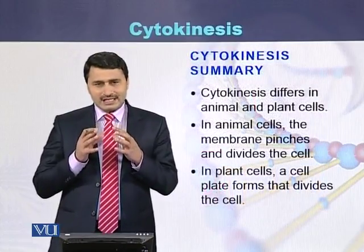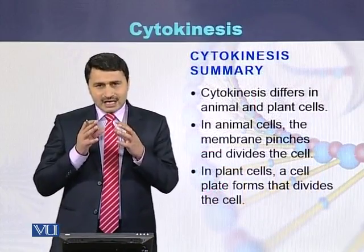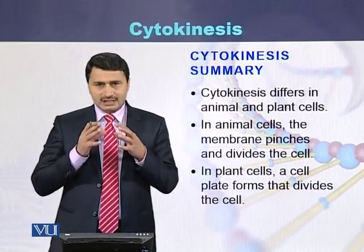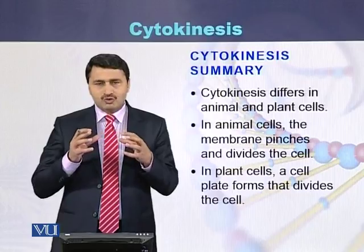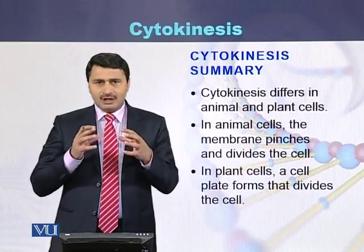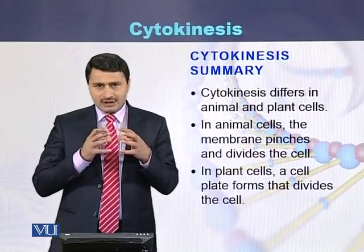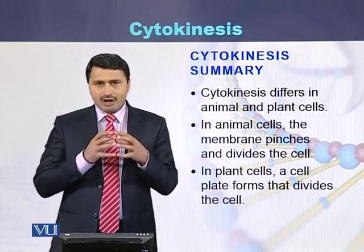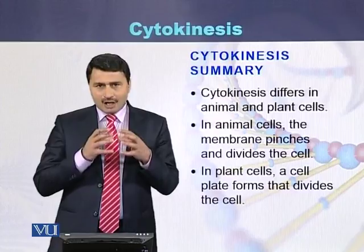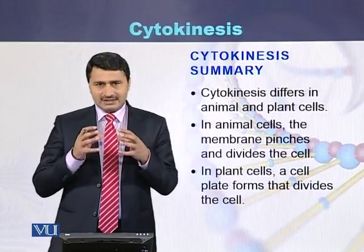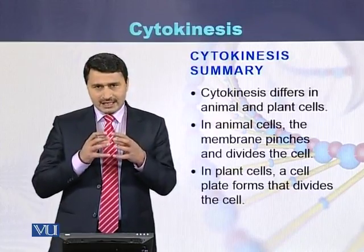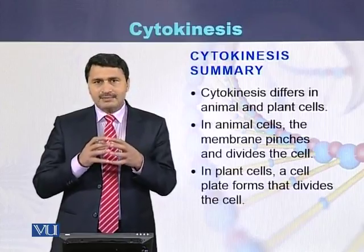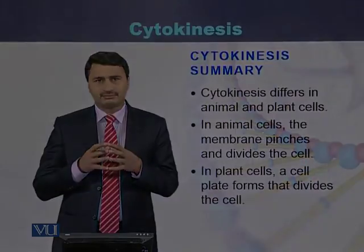To conclude, cytokinesis is a process that converts the cytoplasm into two daughter cells. Each daughter cell contains its nucleus, genetic material, and all other cell organelles, but there is a difference between cytokinesis in the animal cell and in the plant cell.